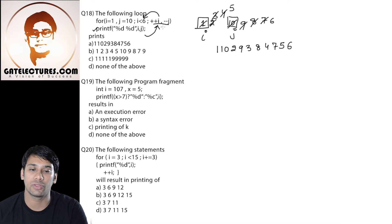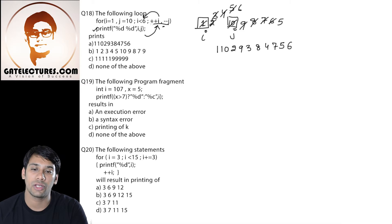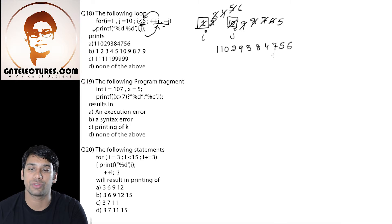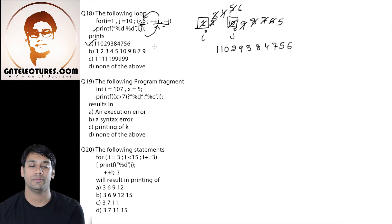Then again it will go to this increment statement and it will make i as 6 and j as 5. Now when the value of i is 6, this condition is false. So because this condition is false, we will come out of this loop. So the output is 1029384756, which is option number A.